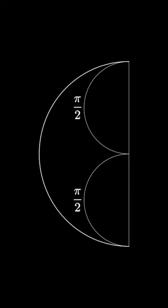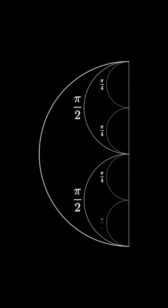Now we can draw two semicircles inside. Each has a radius of 1/2 so has a circumference of pi over 2 for a combined length of pi again.